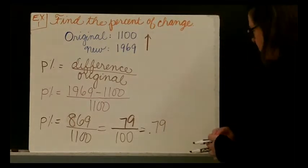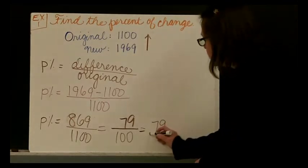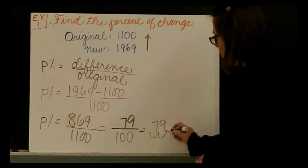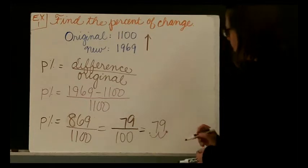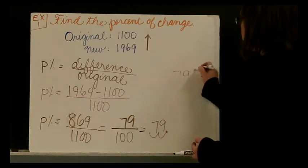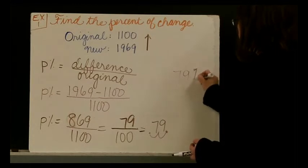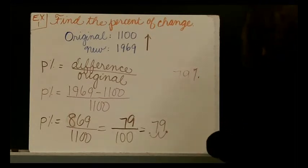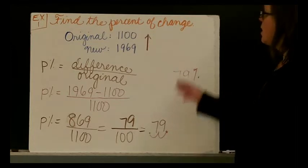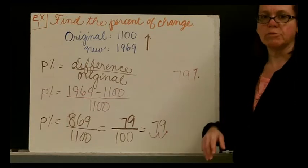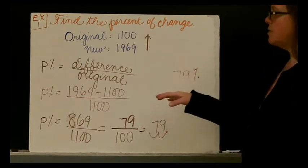Then we multiply that by 100. Remember what that means is we take our decimal point, if you wanted to do it the short way, move it to the right twice, and we end up with 79 percent. I don't have room on the board to write my statement, but my statement will be that the percentage change is an increase of 79 percent. Now we're going to follow these same steps in our second example.